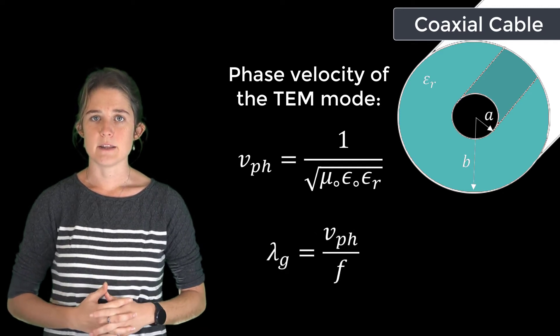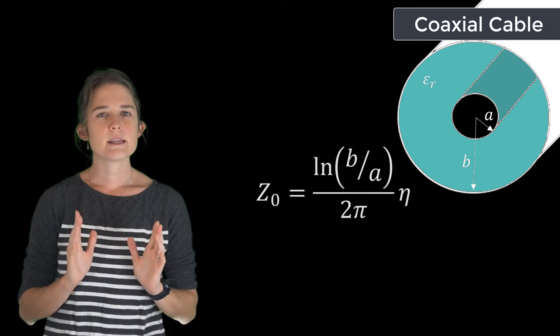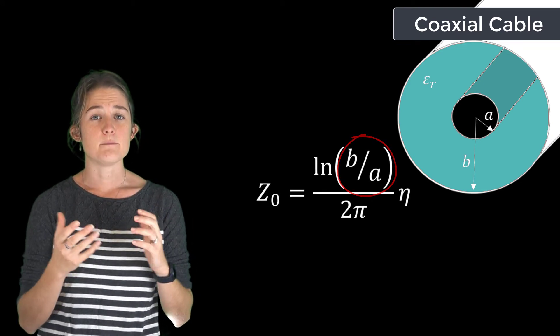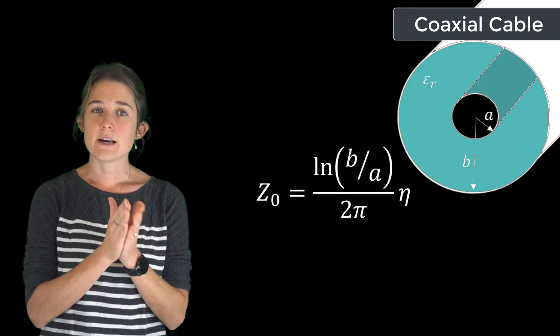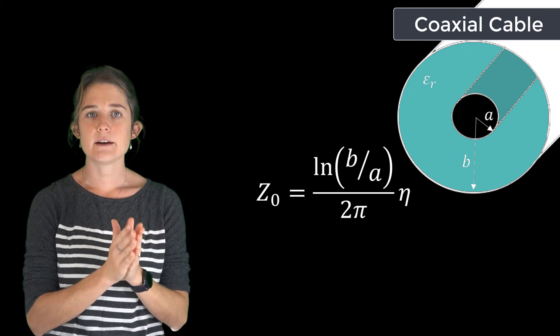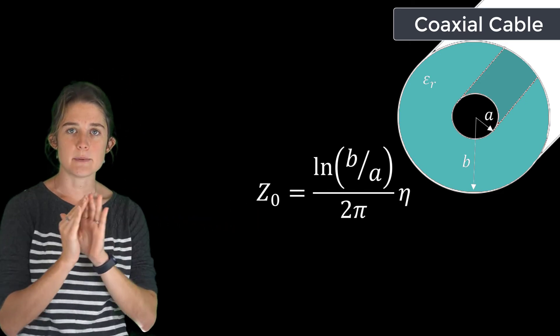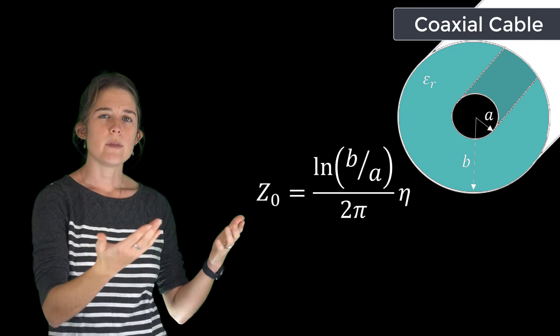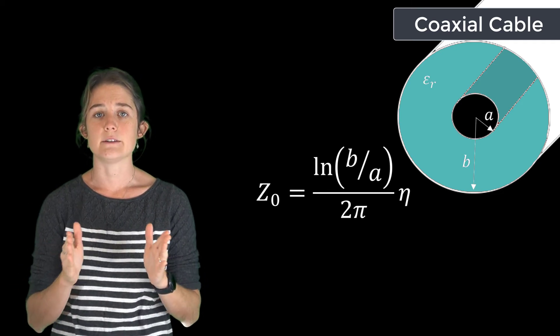Notice that the ratio of b to a is the main geometric parameter that plays a role here. As long as that ratio stays constant, the characteristic impedance is the same. So a coax could be tapered or expanded without causing any change in impedance, as long as both a and b were scaled together.